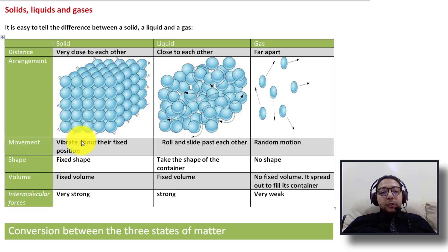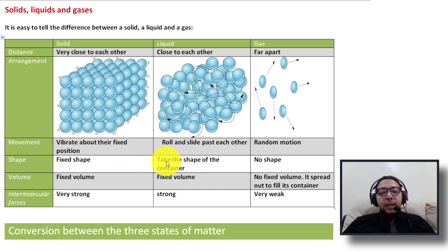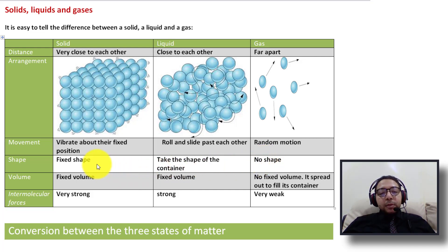For shape: solids have a fixed shape that is maintained in whatever container accommodates them. Liquids have no fixed shape — they take the shape of the container. Gases also have no fixed shape and take the shape of the container.